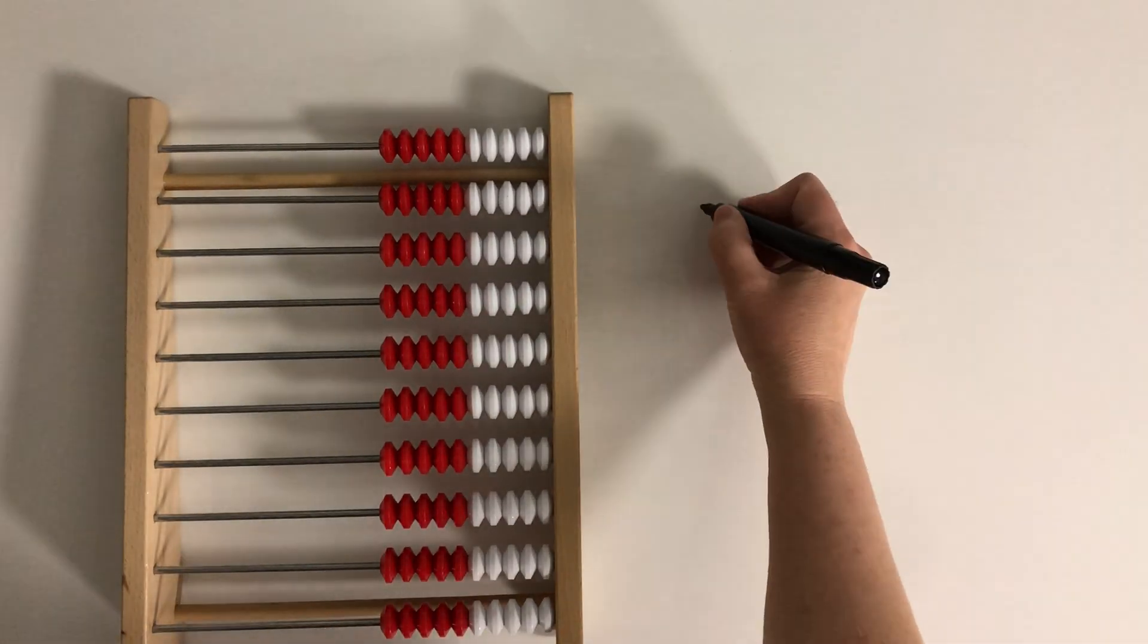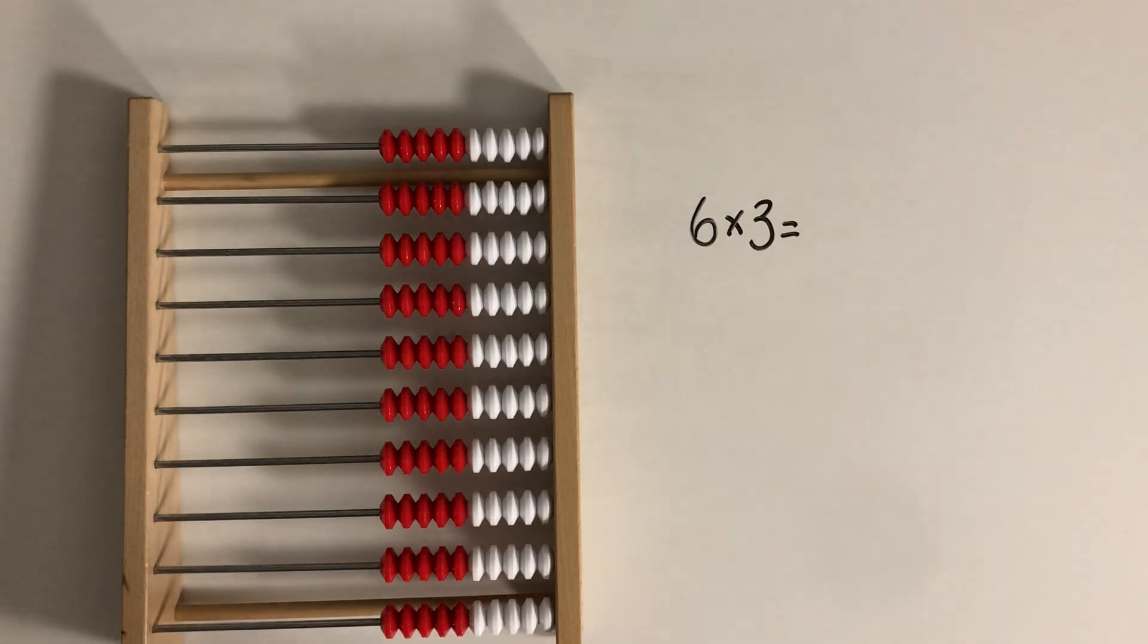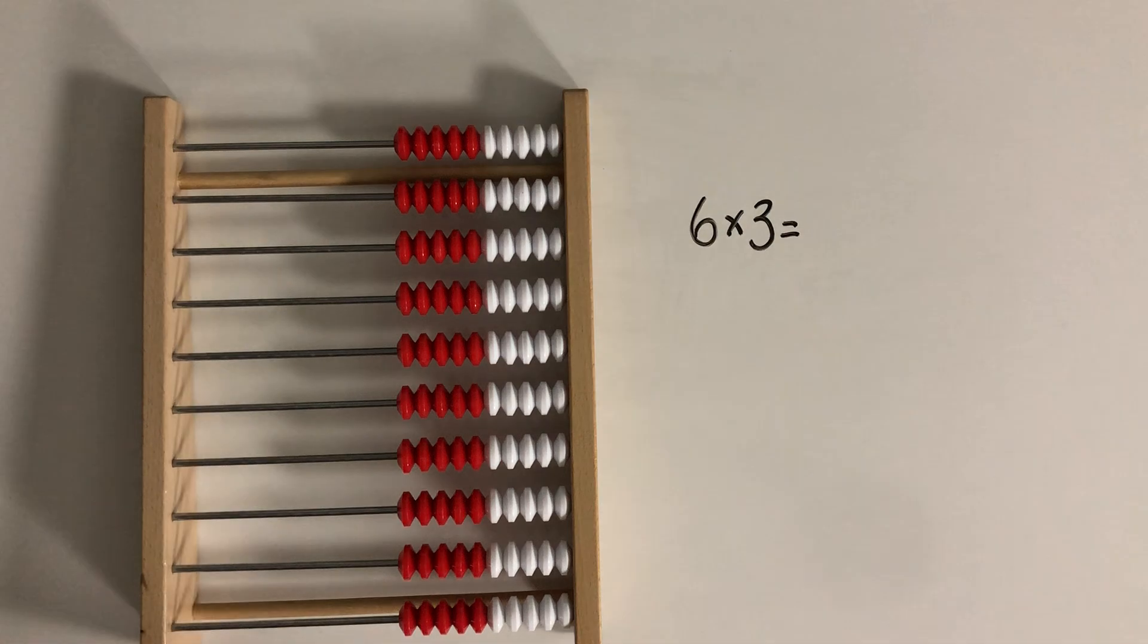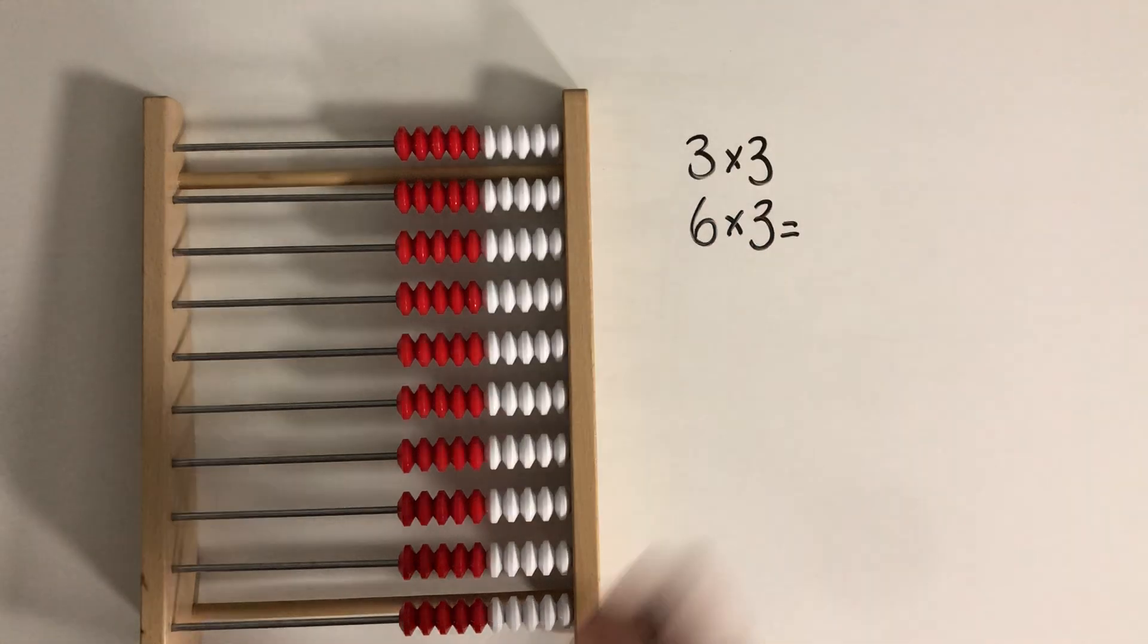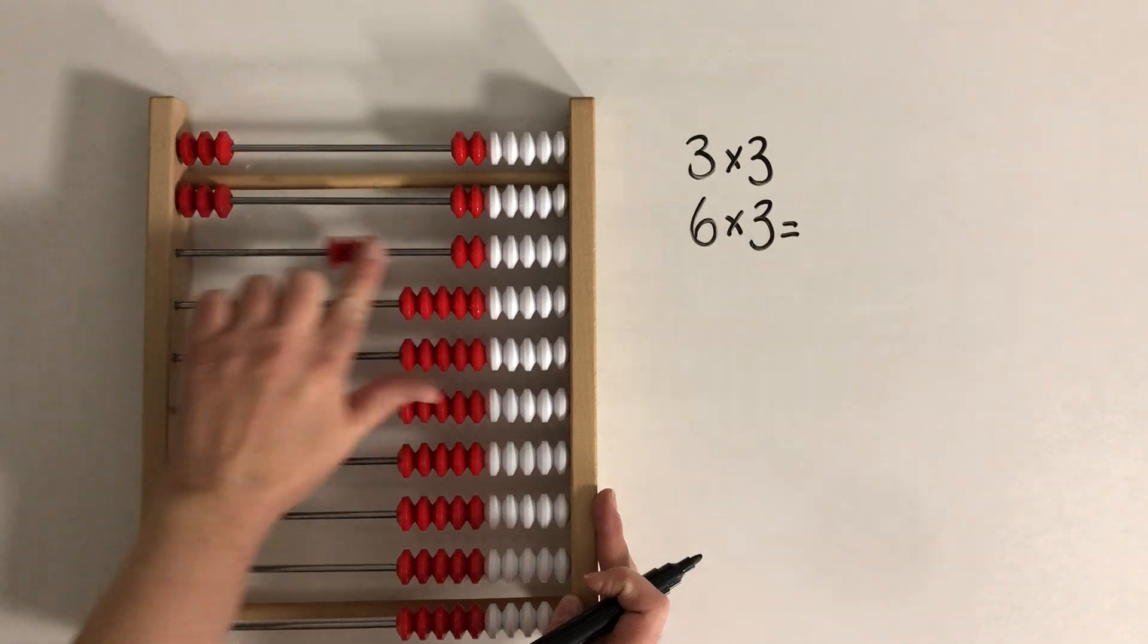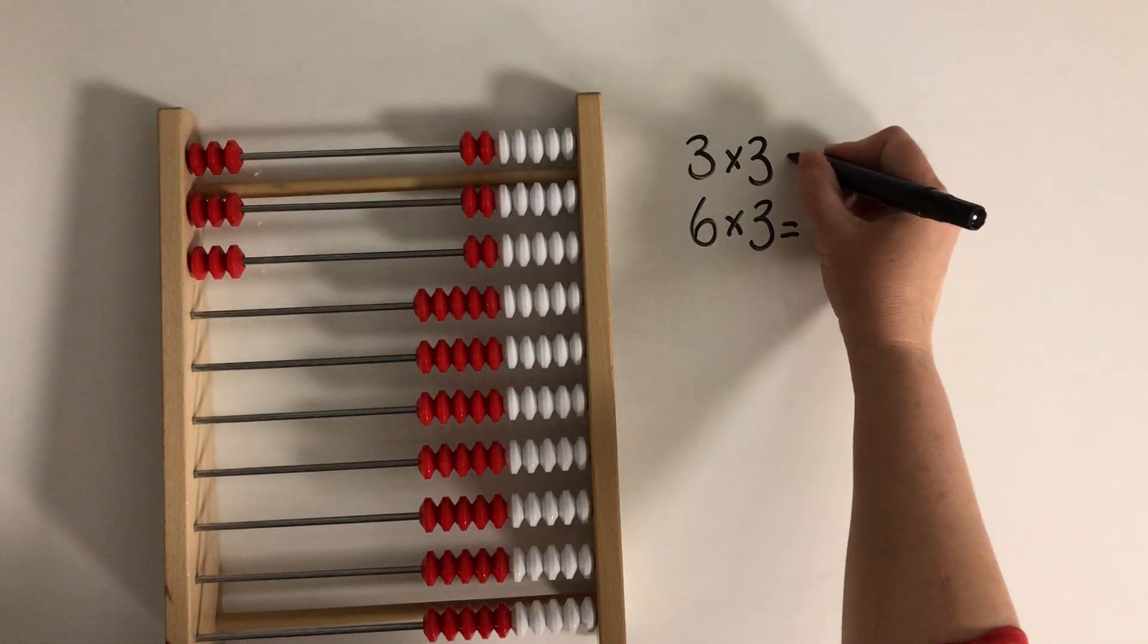So now this will be a pretty easy one. You might know it already. But let's suppose that we are trying to solve 6 times 3 or 6 groups of 3. We could start out by trying to solve 3 groups of 3. So there's 1, 2, 3 groups of 3. And we know that that makes 9.